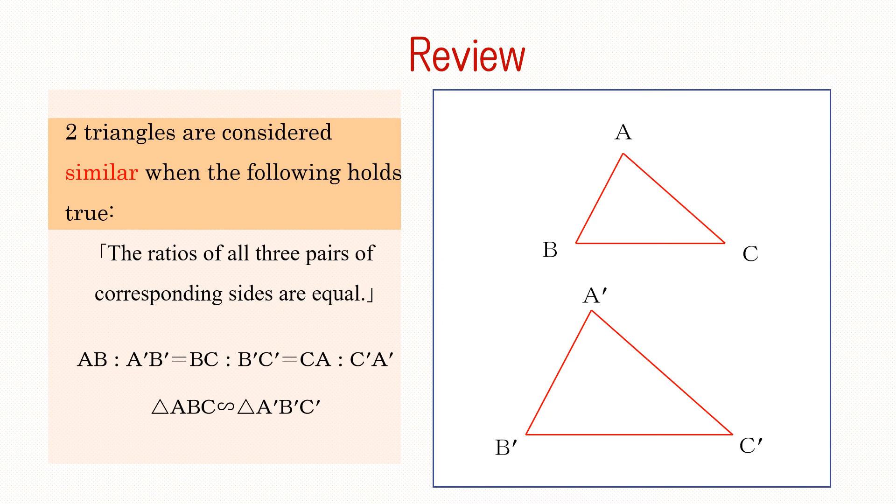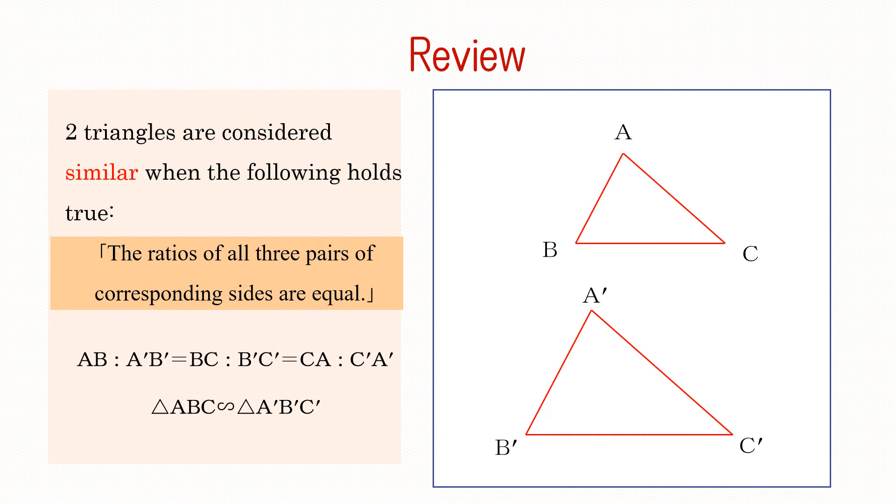Finally, let's review what we have learned. Two triangles are considered similar when the following holds true. The ratios of all three pairs of corresponding sides are equal.